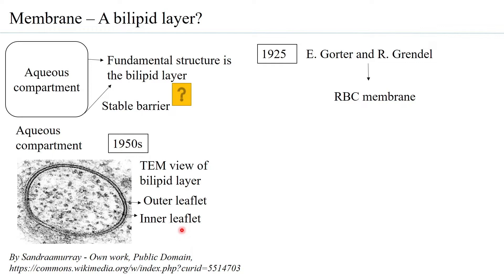Once they isolated the RBCs, they tried to find out the surface area of the RBC membrane — an important fact we will revisit shortly. From the RBC membranes, the lipids were extracted, which is possible by using mild detergents. Detergents are amphipathic in nature — they have a hydrophilic end and a hydrophobic end — and using these detergents one could penetrate the lipid membrane and extract the lipids.